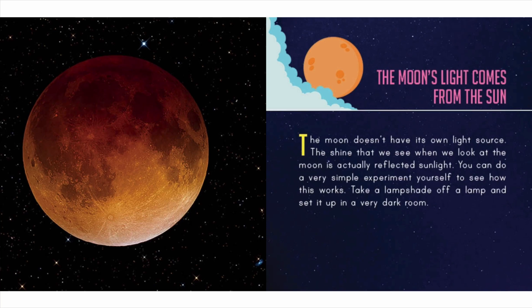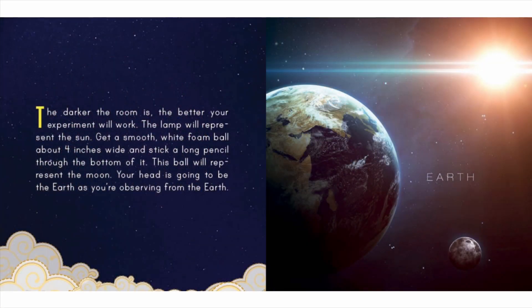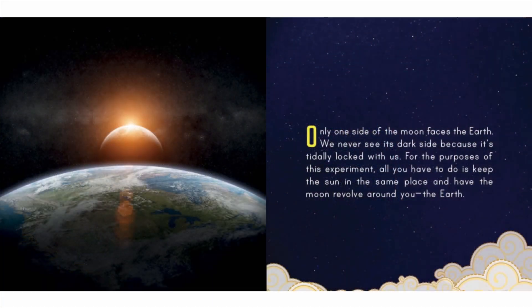Take a lampshade off a lamp and set it up in a very dark room — the darker the room the better your experiment will work. The lamp will represent the sun. Get a smooth white foam ball about four inches wide and stick a long pencil through the bottom of it; this ball will represent the moon. Your head is going to be the earth as you're observing from earth. Note that only one side of the moon faces the earth — we never see its dark side because it's tidally locked with us.